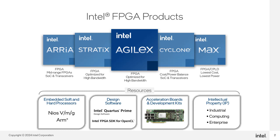With the ability to adapt quickly to changes in algorithms and data patterns, FPGAs can be reconfigured in the field to accelerate virtually any digital algorithm. They are available in five current families: MAX, Cyclone, ARIA, Stratix, and the newest family Agilex, all with increasing capacity, performance, and feature sets.